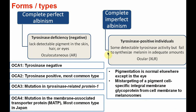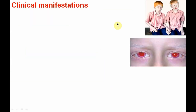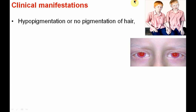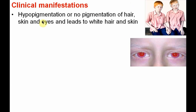These are the two important forms or types of albinism. Now let us see the clinical manifestations. Hypopigmentation or no pigmentation of hair, skin, and eyes leads to white hair or skin.